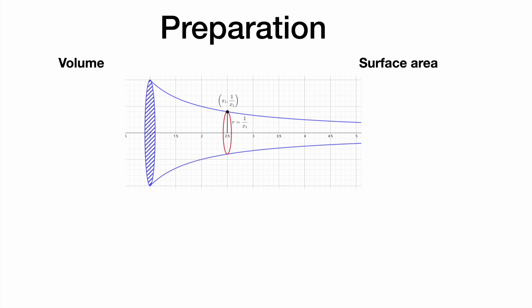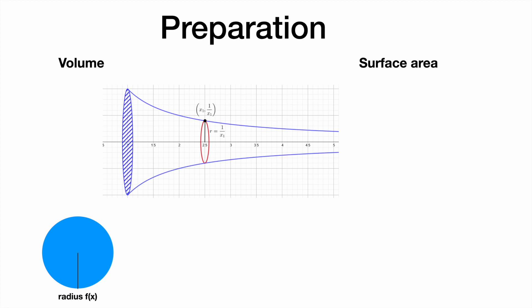First, we calculate the volume. We do this calculation in the standard calculus way. Let's consider an arbitrarily thin vertical slice of the horn at any point. We want to add infinitely many, infinitely thin slices with radius f of x and height dx.